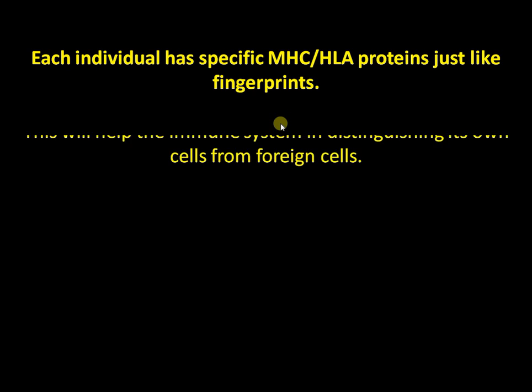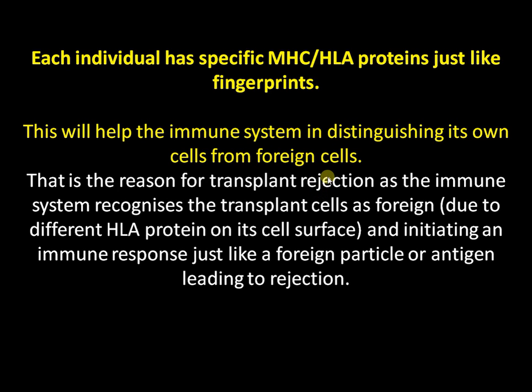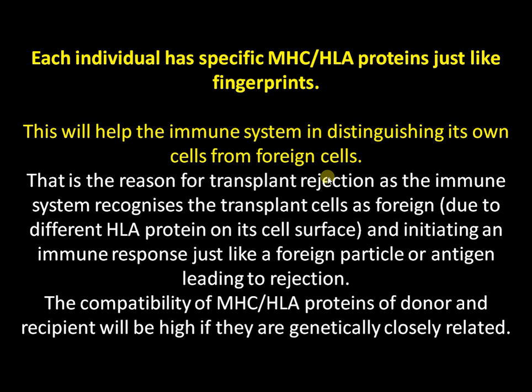Each individual has specific MHC or HLA proteins, just like DNA fingerprints. This helps the immune system distinguish its own cells from foreign cells. This is why transplant rejection occurs — the immune system recognizes transplanted cells as foreign and initiates an immune response, leading to graft rejection. Therefore, compatibility of MHC proteins between donor and recipient is essential for successful organ transplantation. That is why organs from genetically closer relatives have a higher chance of success.